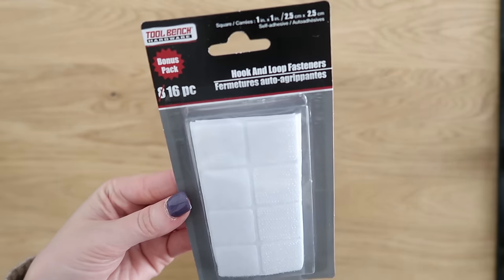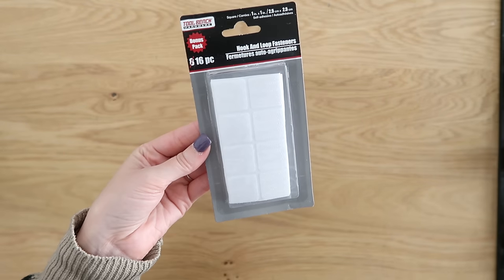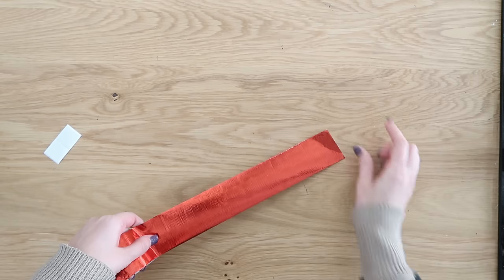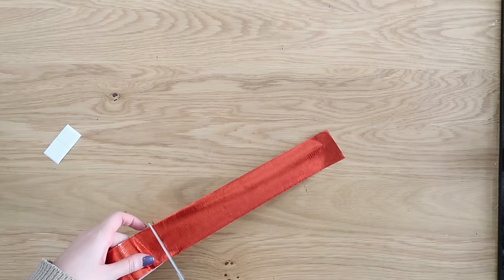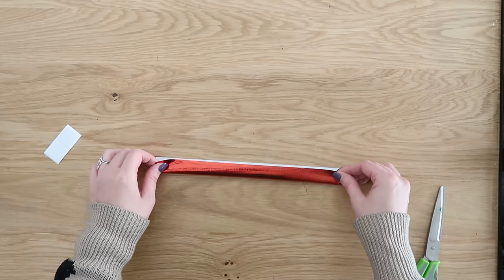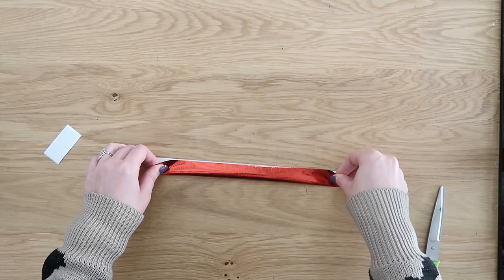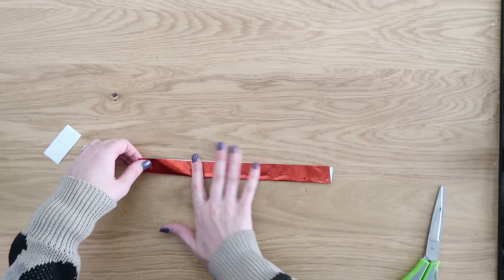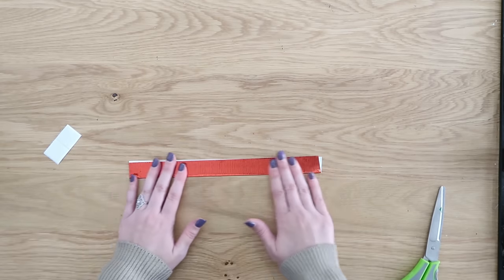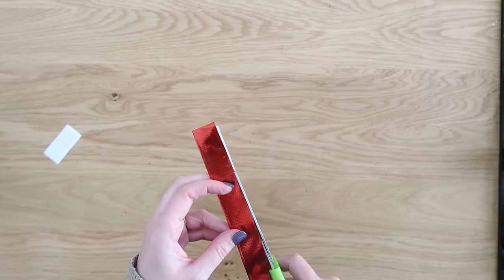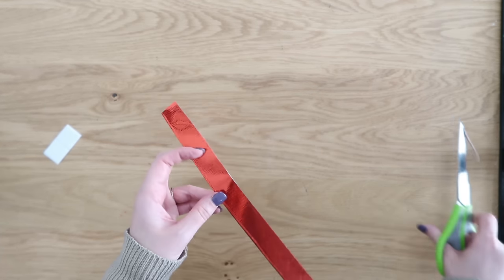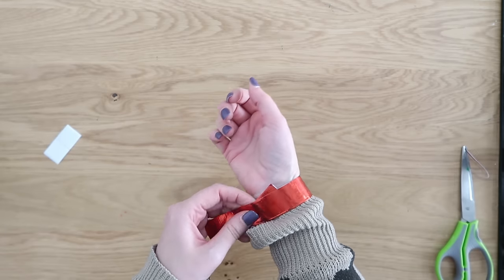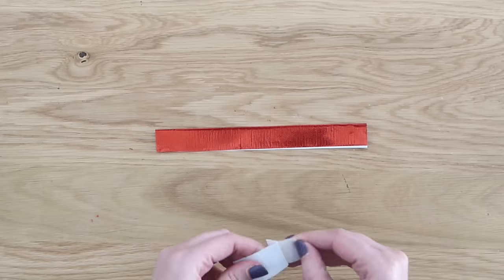This next one is just for fun. Grab some of this hook and loop fastener from Dollar Tree, also basically known as adhesive back velcro. We're going to make some fun bracelets. Cut a long strip of your duct tape of choice and you're going to fold it in half longways. It's okay if you have some of that adhesive kind of poking out. Take your scissors, trim that off so you don't see it, and then we're going to fit that around our wrist.